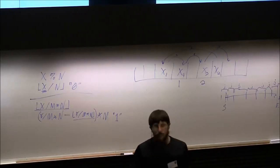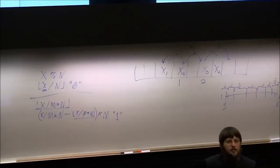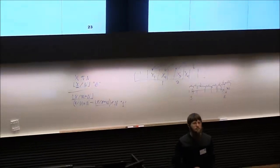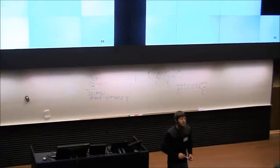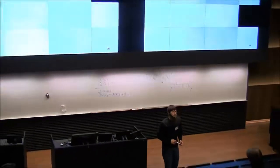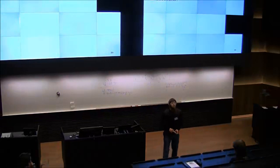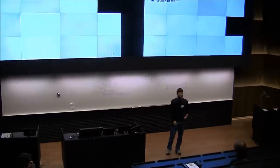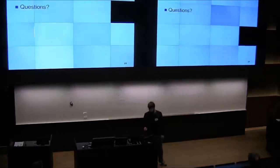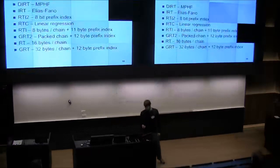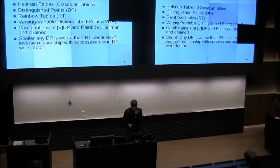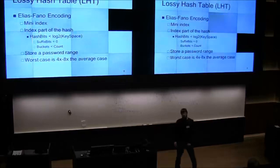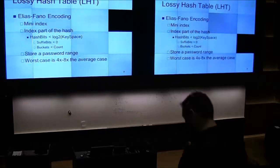Question: Do you compare the different formats for storing the index only based on disk space, or does the IRT format require you to decompress it in memory? That's why I got through a little quicker — I forgot to describe how the mini index works. It's the same type of mini index for rainbow tables as for lossy hash tables.